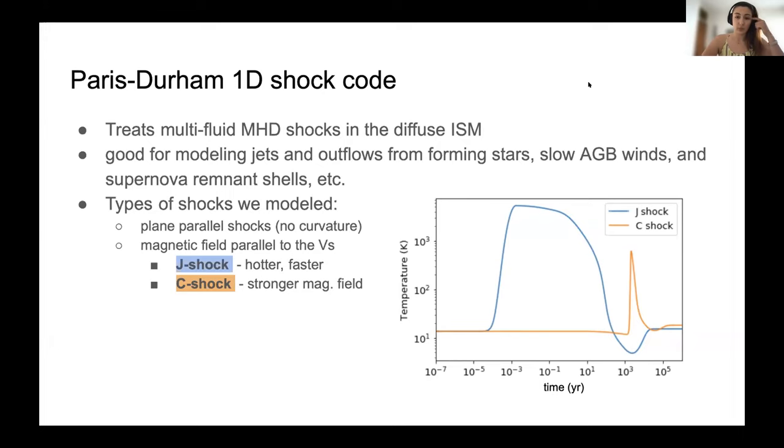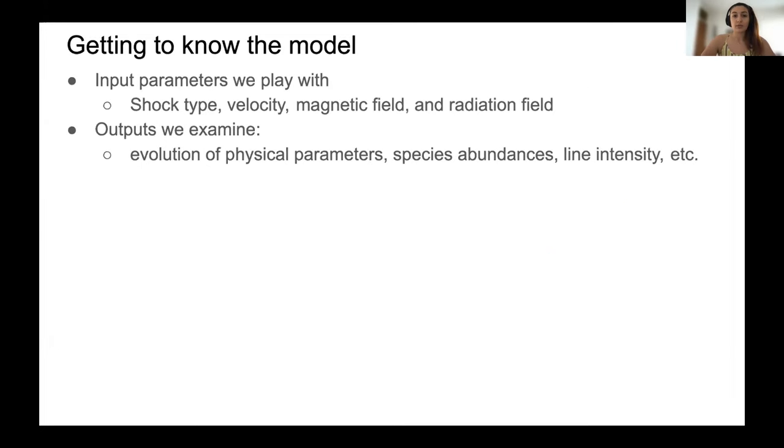The first thing we had to do was get to know the model. We were playing with different input parameters, so different shock types, C and J-shocks, different velocity, magnetic field, and turning the radiation field on or off. And then we would examine different outputs, so evolution of different physical parameters and abundances of different species and line intensity.